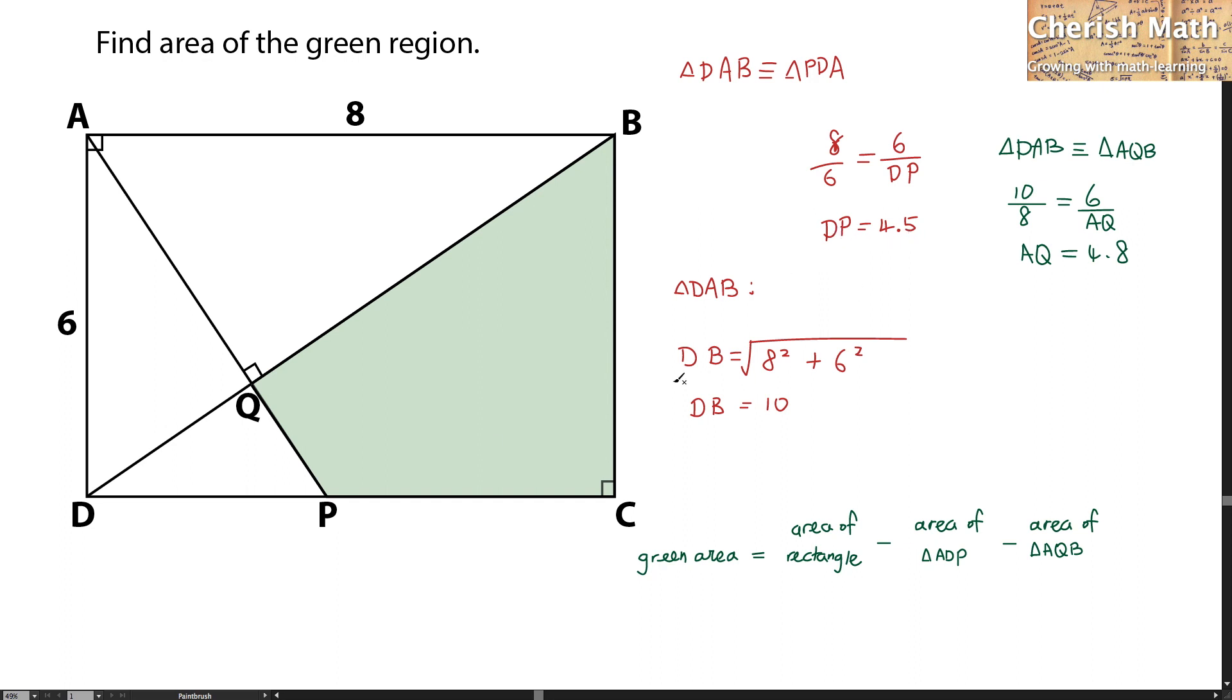Let me label the length on each side. DP is 4.5, so this is 4.5 for DP. AQ is 4.8. This is AQ, which is 4.8.